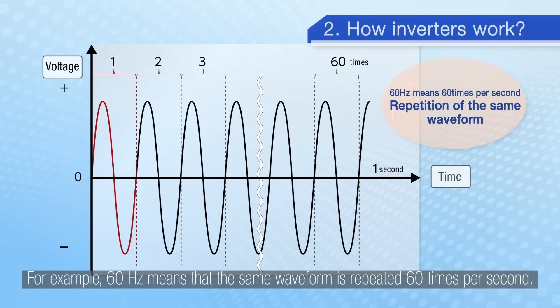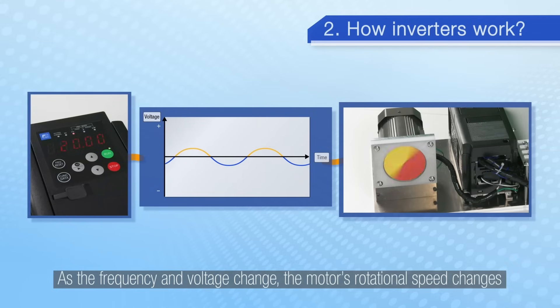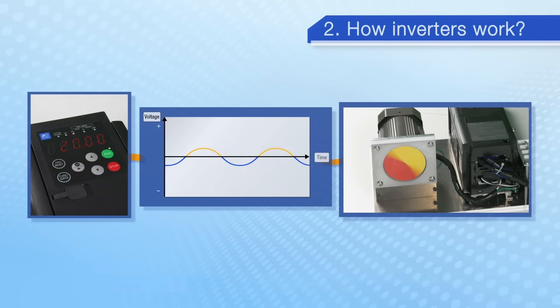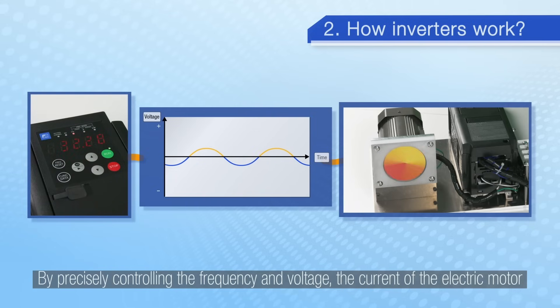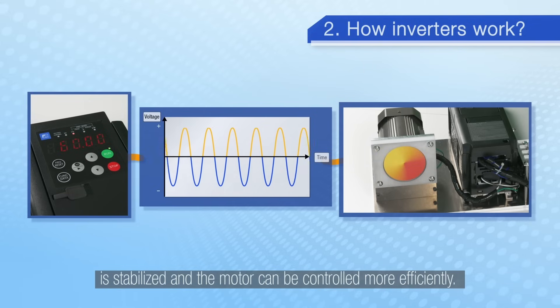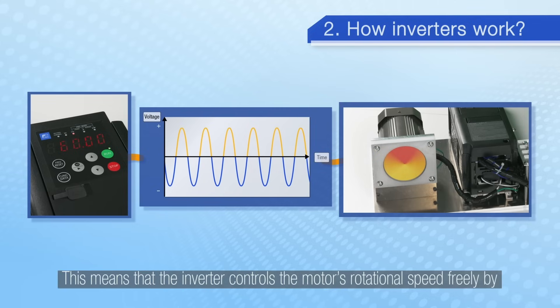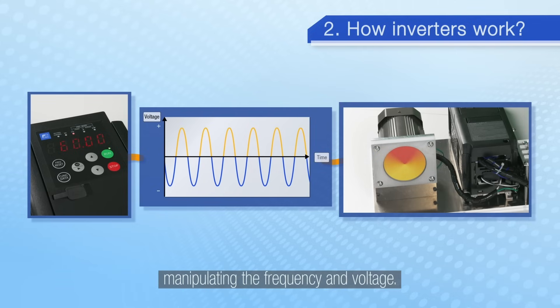For example, 60 Hz means that the same waveform is repeated 60 times per second. As the frequency and voltage change, the motor's rotational speed changes along with the rotational speed of its rotating magnetic field. By precisely controlling the frequency and voltage, the current of the electric motor is stabilised and the motor can be controlled more efficiently. This means that the inverter controls the motor's rotational speed freely by manipulating the frequency and voltage.